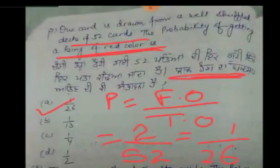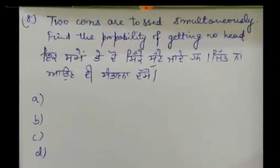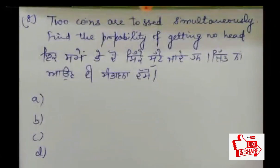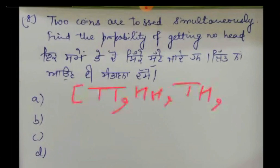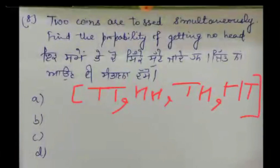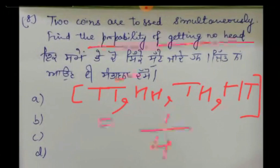8th sum: 2 coins are tossed simultaneously. The sample space has 4 total outcomes: head-head, head-tail, tail-head, tail-tail. So our answer will be 1 by 4.